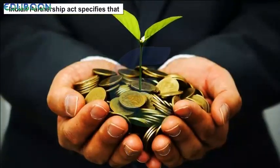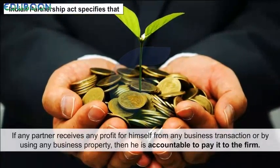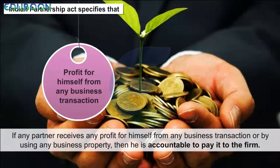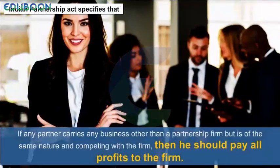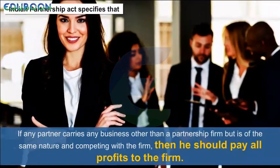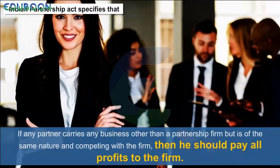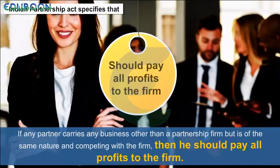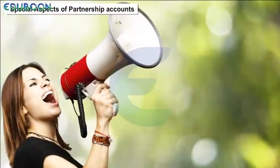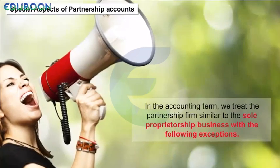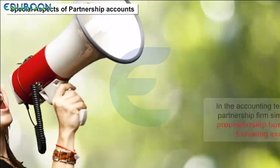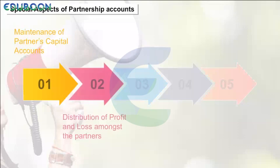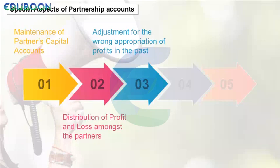The Indian Partnership Act specifies that if any partner receives any profit for himself from any business transaction or by using any business property, then he is accountable to pay it to the firm. If any partner carries on any business other than the partnership firm but of the same nature and competing with the firm, then he should pay all profits to the firm. In accounting terms, we treat the partnership firm similar to the sole proprietorship business, with exceptions for maintenance of partners' capital accounts, distribution of profit and loss amongst partners, adjustment for wrong appropriation of profits in the past, reconstitution of the partnership firm, and dissolution of the partnership firm.